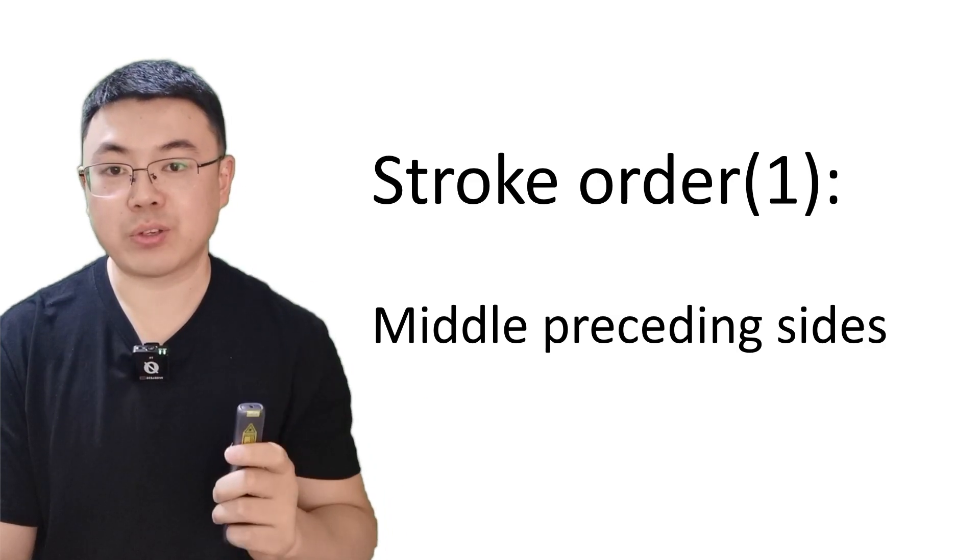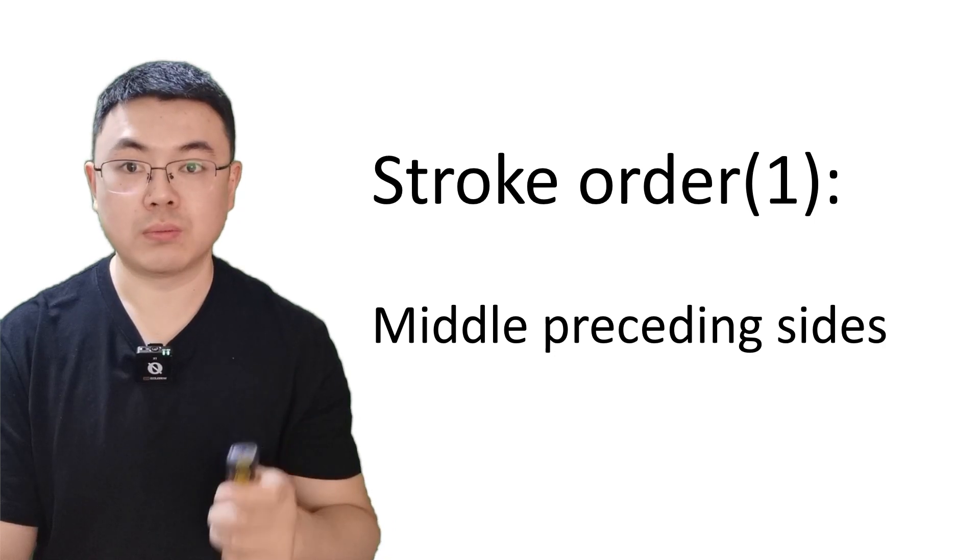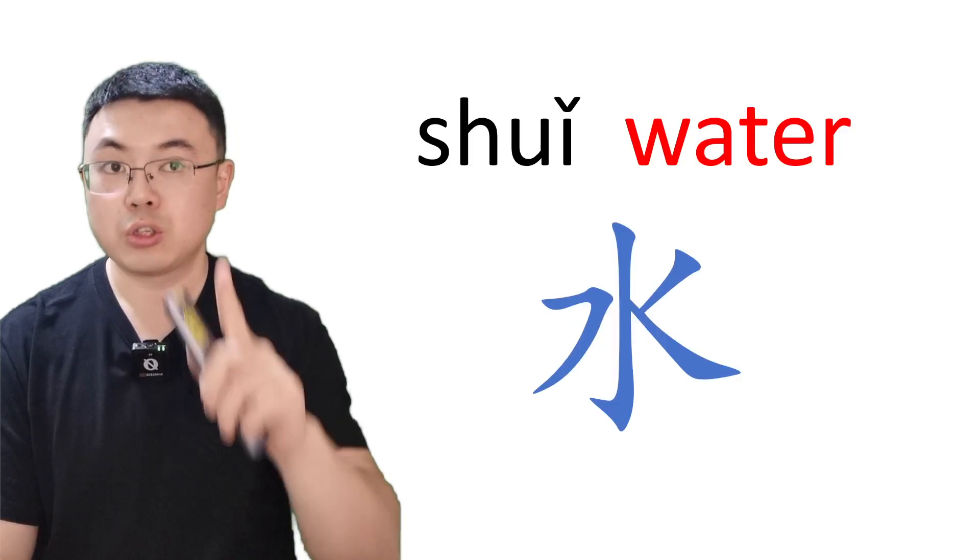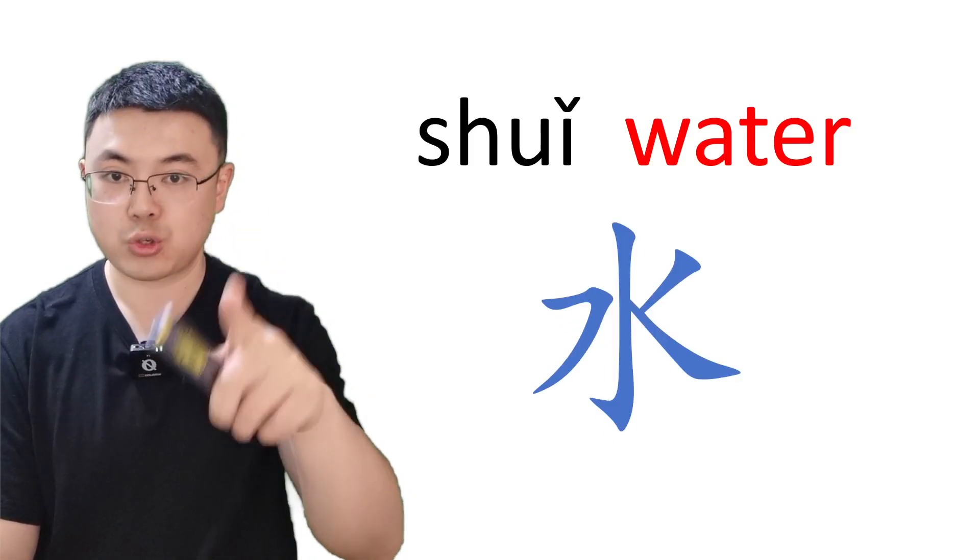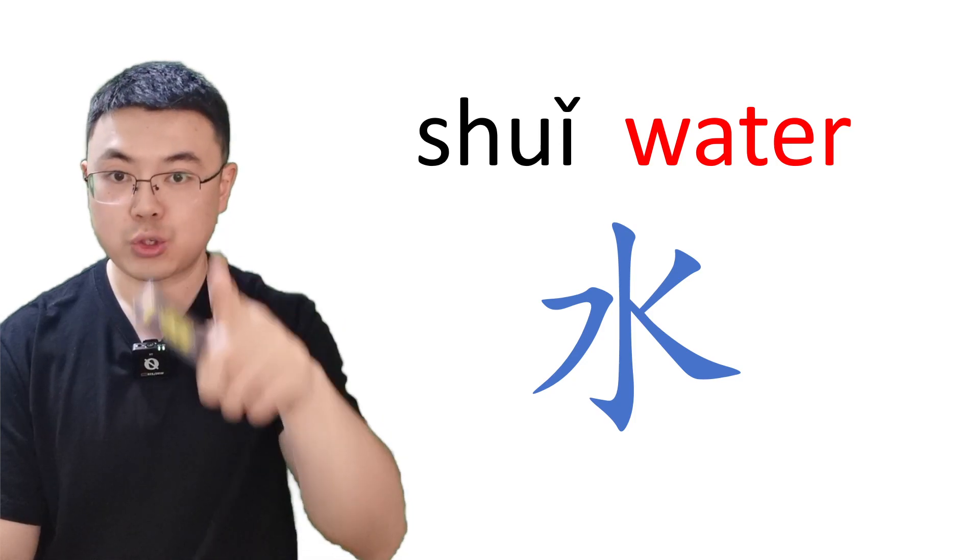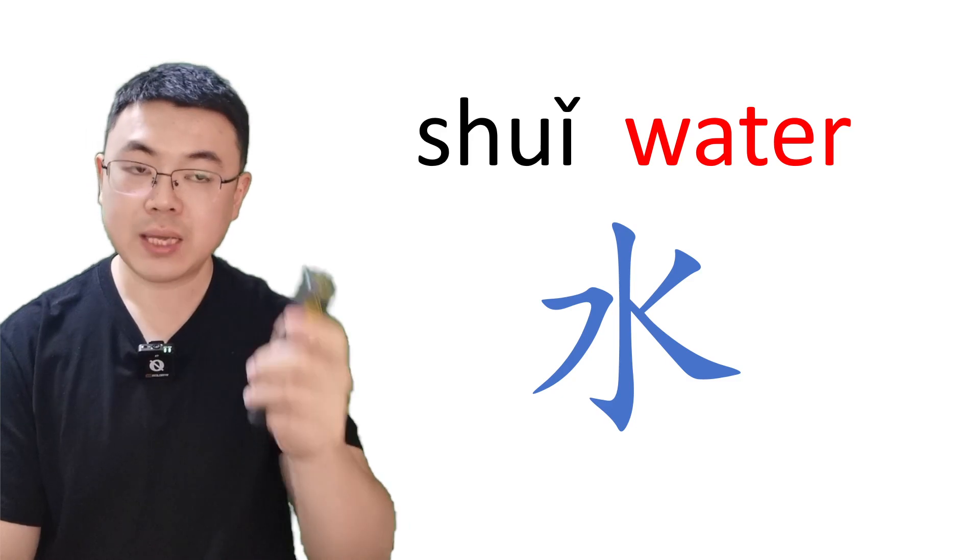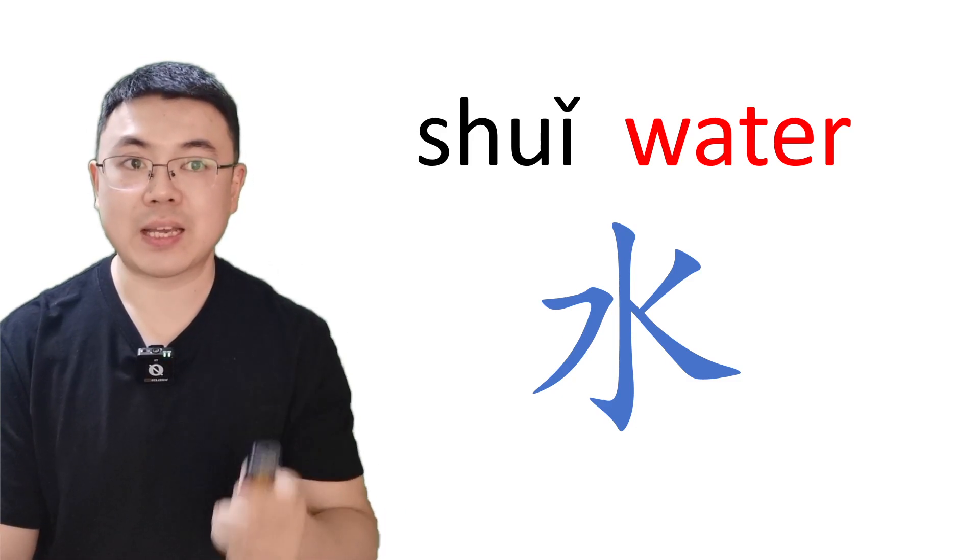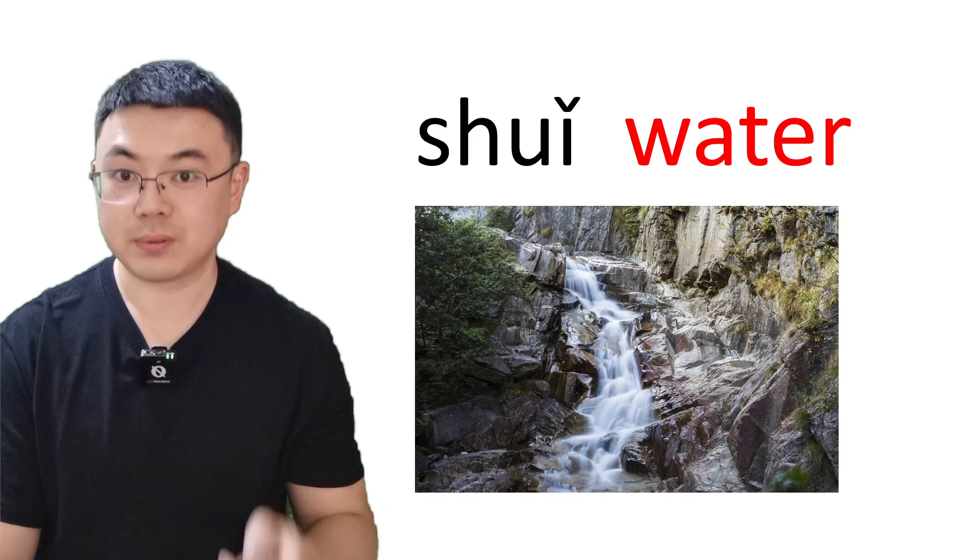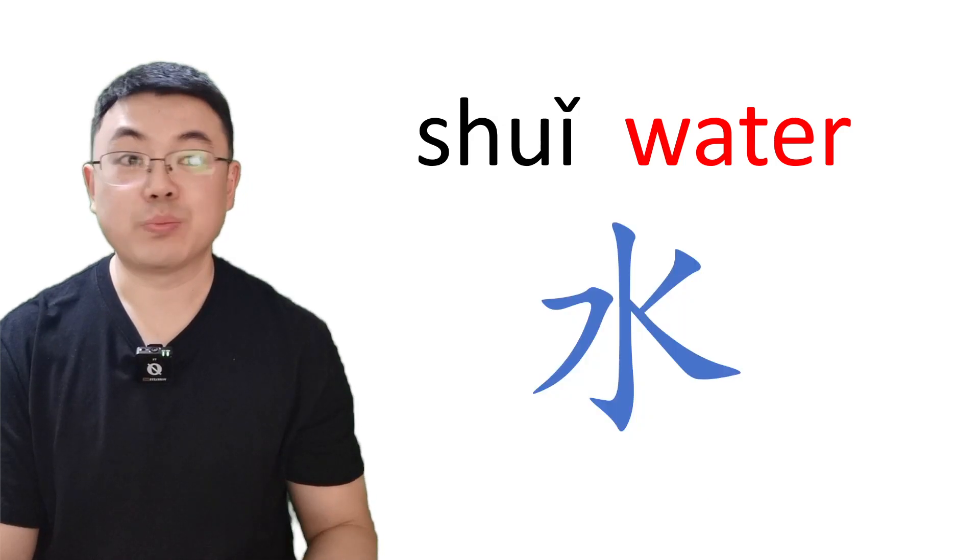So the second character follows the same rule. Please read after me. Shui, third tone. It means water. Look at this character. It's just like flowing water, right? Such a beautiful character.